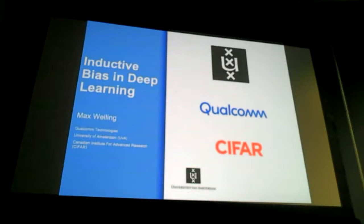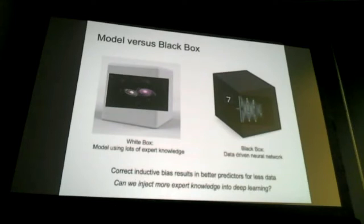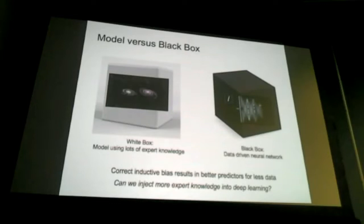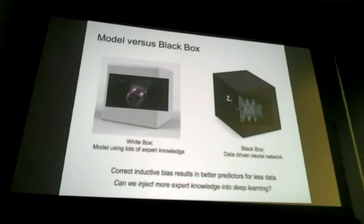I want to talk about this paradigm, or dichotomy, in machine learning. On one hand, there are scientists in all other fields who model their specific domain — writing down models of physics, medical dynamics, and so on. They put all their expert knowledge into simulators and models, then study those, infer parameters, and interpret them — like this simulation of two colliding galaxies.